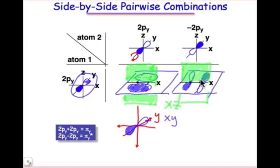The z combinations 2pz plus 2pz, 2pz minus 2pz, lead to analogous types of pi and pi-star interactions.